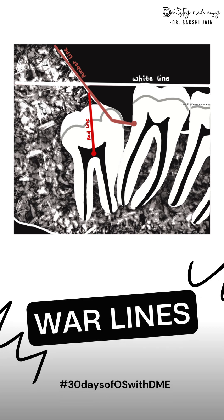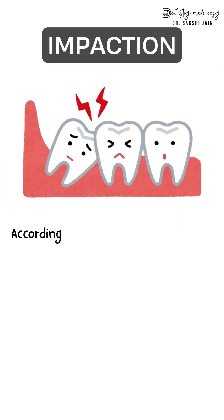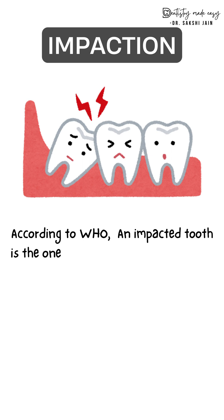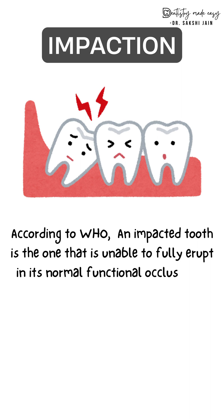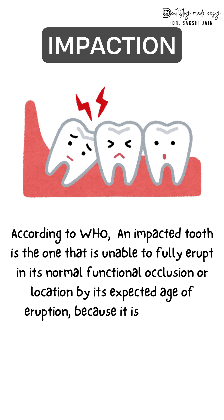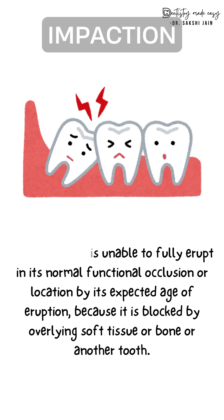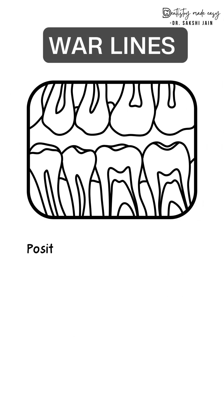Starting with the next topic: WAR lines from impaction. An impacted tooth is one which is unable to fully erupt in its normal position or occlusion by its expected age of eruption, because it can be blocked by another tooth, by the bone, or by the soft tissue.